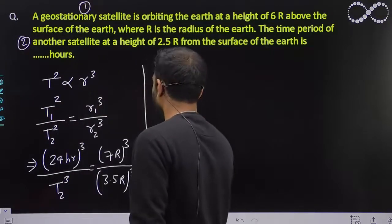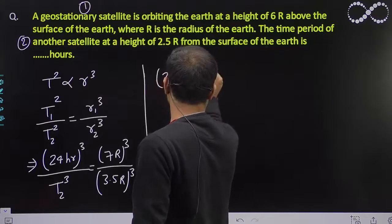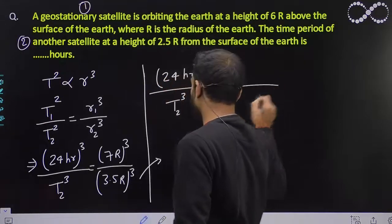If I do this calculation here, this will be 24 squared divided by T2 squared, and if you will do this...